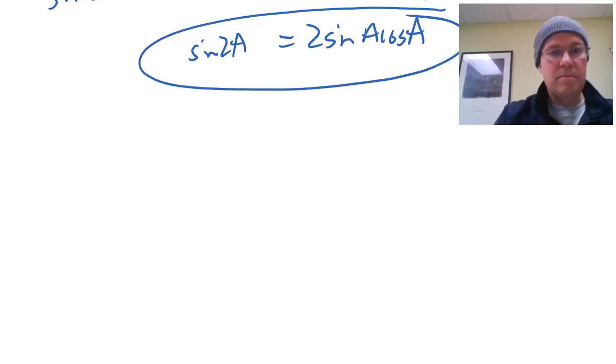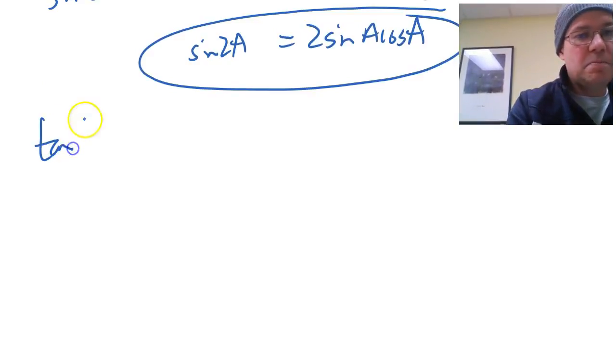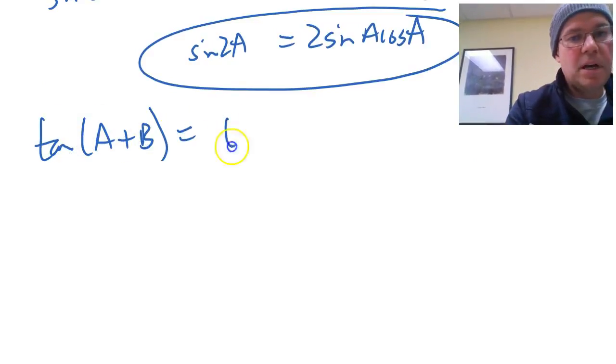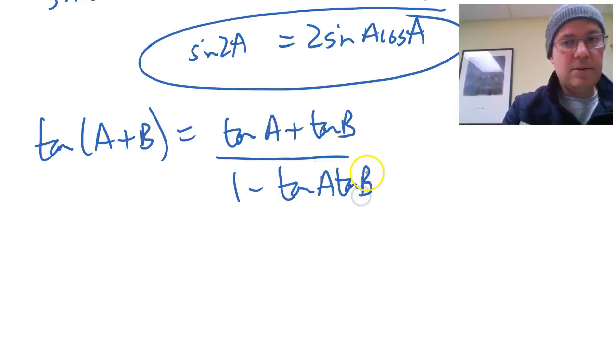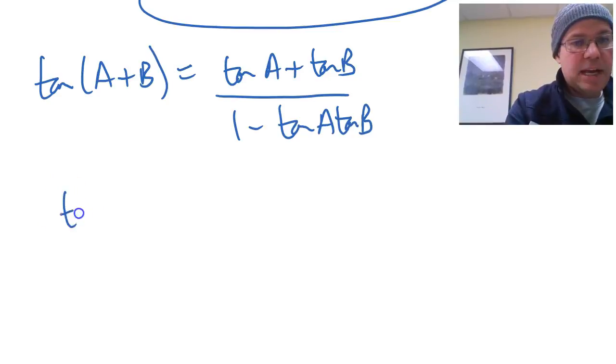Now tan 2A, that comes from the tan A plus B formula, so if you remember the tan A plus B formula, it's tan A plus tan B over 1 minus tan A tan B. And I'm sure you're getting the hang of this now, you could try this yourself. Just swap the B for an A.